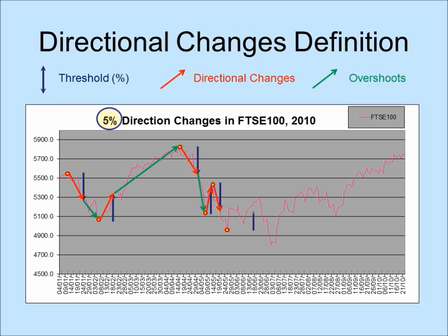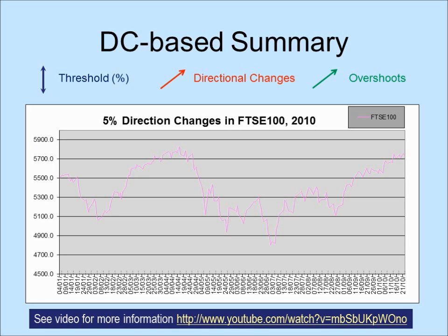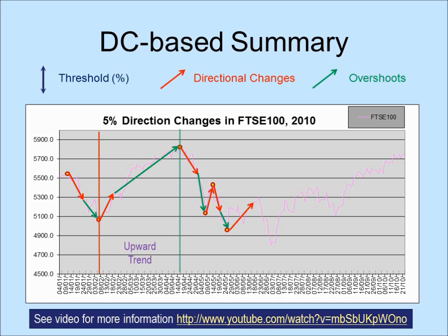I have recorded a longer video to explain directional changes in greater detail. To recap, a 5% directional change is basically a price change of 5% from the last peak or bottom price. We say that the market was in an upward trend from the bottom price to the next peak. It comprises a directional change event followed by an overshoot event. Similarly, the market was in a downward trend from a peak to the next bottom price. Under a directional change-based summary, the market alternates between upward and downward trends.